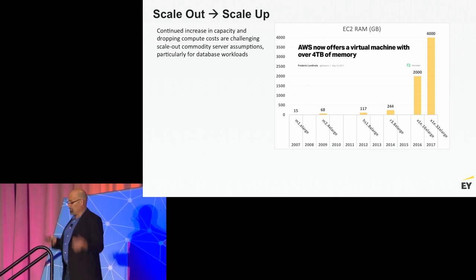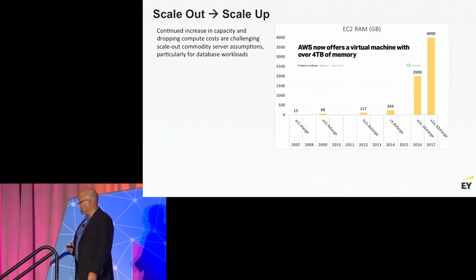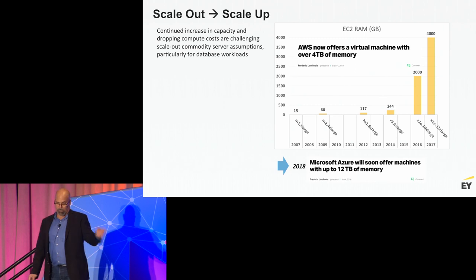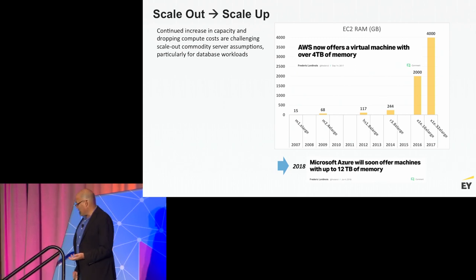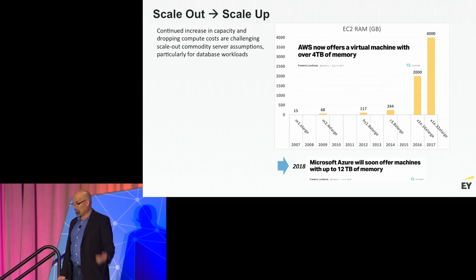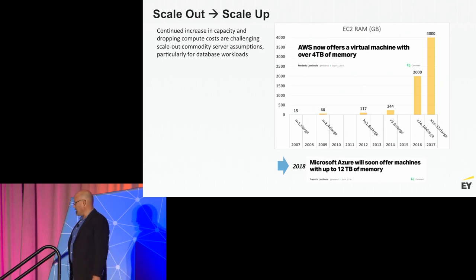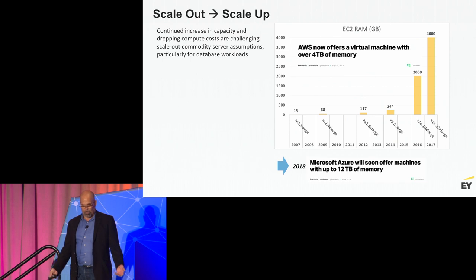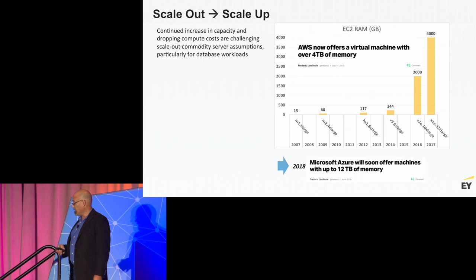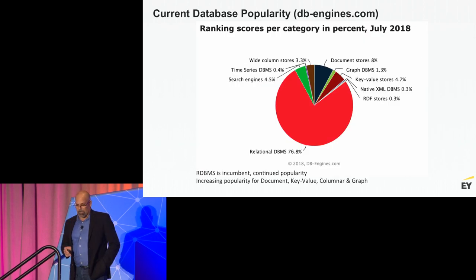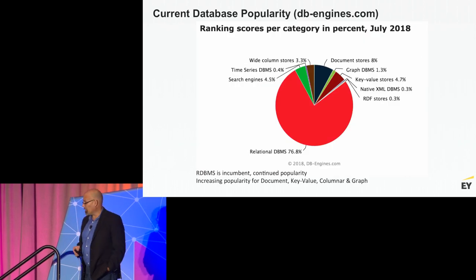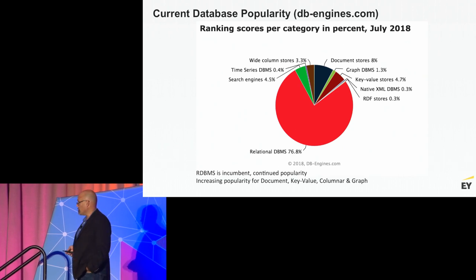Microsoft then announced a 12-terabyte VM available on Azure sometime later this year. It's very likely that five years from now we could be looking at cloud-based servers with 100 terabytes of memory, maybe a petabyte. This is one of the things making graphs very, very interesting — particularly Neo4j, which is a scale-up solution.